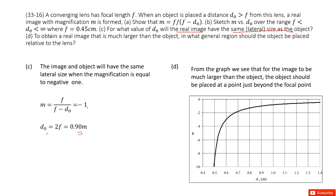The next one, if we want to obtain a real image that is much larger than the object, so where should we place the object? That means where should d₀ be? So you can see we have this graph we plotted in part b.